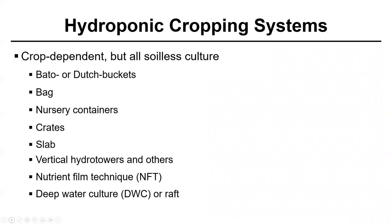When it comes to hydroponic cropping systems, it's really crop dependent. But in general, they're all soilless — meaning there is no field soil, but it could be either a peat or coir-based substrate or simply a nutrient solution. The most common types of hydroponic cropping systems from small scale all the way up to commercial scale include Bato or Dutch buckets, bag culture, nursery containers, crates, slab culture, vertical hydro towers, and other types of vertical production systems, nutrient film technique (also referred to as NFT), and deep water culture or raft culture, also called deep flow culture.